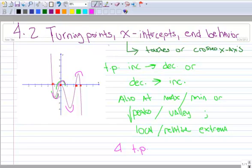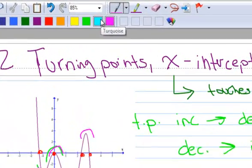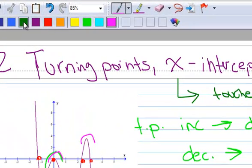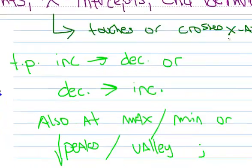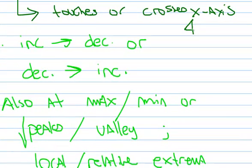Let's go back to the x-intercepts and count how many we have — those were done in red. One, two, three, four. So we had four x-intercepts. Those are the fairly easy concepts to understand.